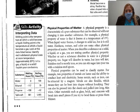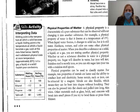A physical property is a characteristic of a pure substance that can be observed without changing it into another substance. For example, a physical property of water is that it freezes at zero degrees C. When liquid water freezes it changes to solid ice, but it is still water. Hardness, texture, and color are some other physical properties of matter. When you describe a substance as a solid, a liquid, or a gas, you are stating another physical property. Whether or not a substance dissolves in water is a physical property too — sugar will dissolve in water, but iron will not. Stainless steel is mostly iron, but you can stir sugar into your tea with a stainless steel spoon. Physical properties can be used to classify matter. True properties of metals are luster and the ability to conduct heat and electricity. Some metals, such as iron, can be attracted to a magnet. Metals are also flexible, which means they can be bent into shapes without breaking. They can also be pressed into flat sheets and pulled into thin, long wire. Other materials, such as glass, brick, and concrete, will break into small pieces if you try to bend them or press them into thinner objects.